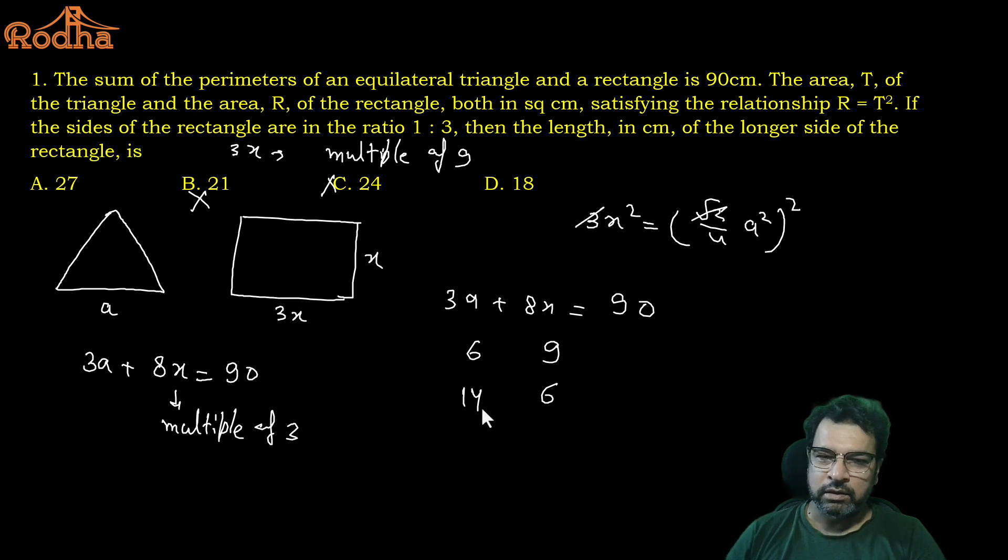If you put X equal to 9, you will get 72 here, 72 means 18 and A is equal to 6. If you put 18, X is equal to 6, so 48 is gone and 42 is left. 42 upon this is 14. These are the possible values, now look at this, can we eliminate this? Yes, look at this point.